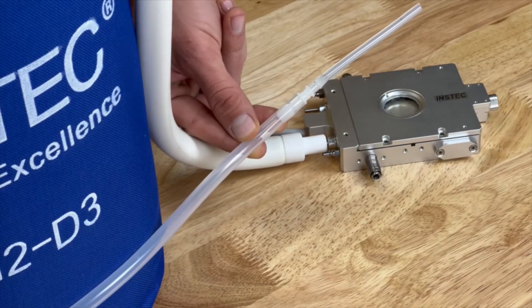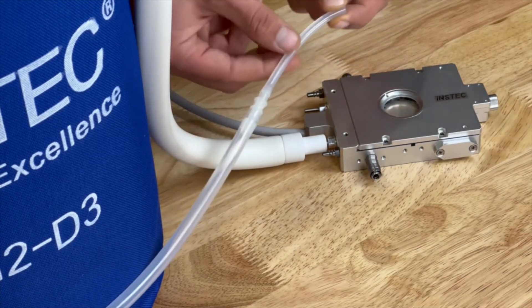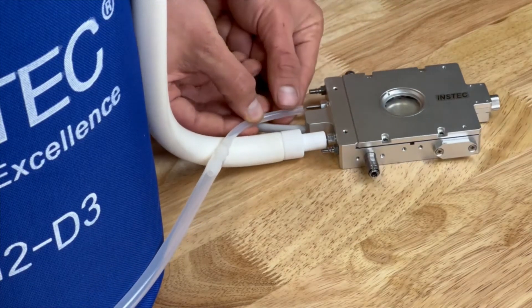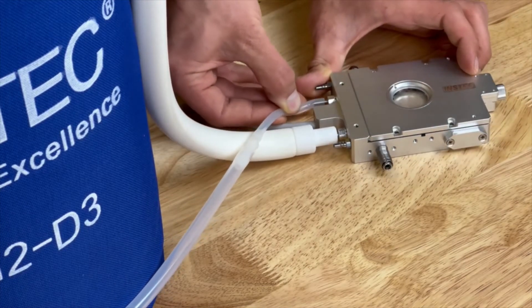Next connect the outlet tubing. A tubing reducer will be provided if needed like the one shown here. The thermal plate has no preference for which is the inlet and the outlet port, so feel free to use whichever is convenient.